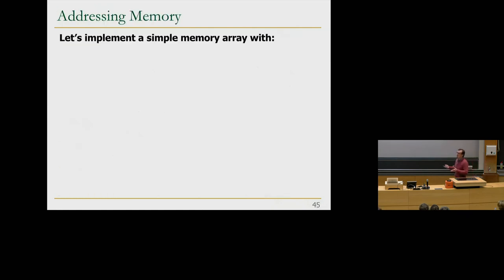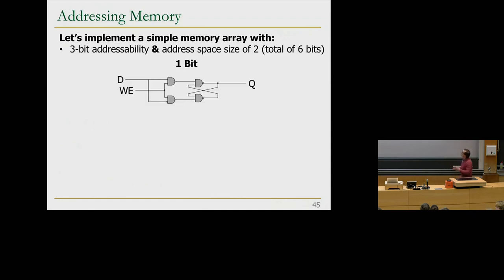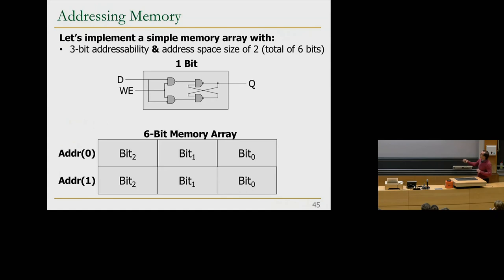Let's implement a simple memory array with 3-bit addressability and address space size of two — meaning two locations each storing three bits. This is the simplest memory compared to a register: a register has only one location, but I want two. I need to say 'address zero, read from this part' and 'address one, read from that part,' each returning three bits.